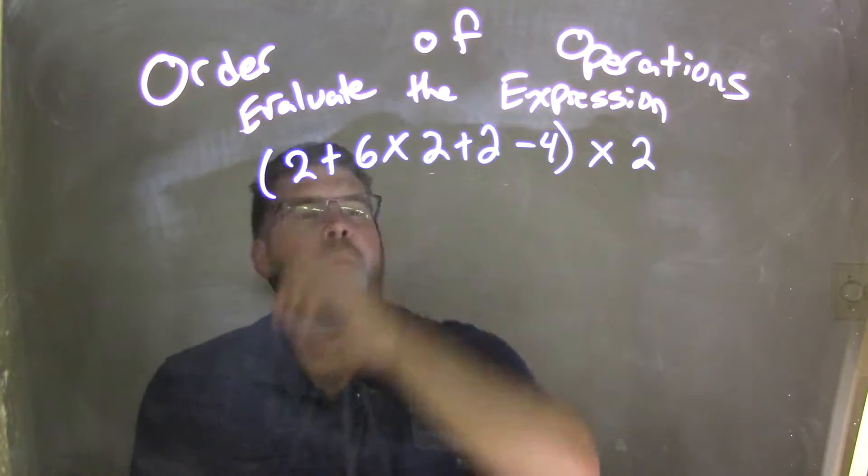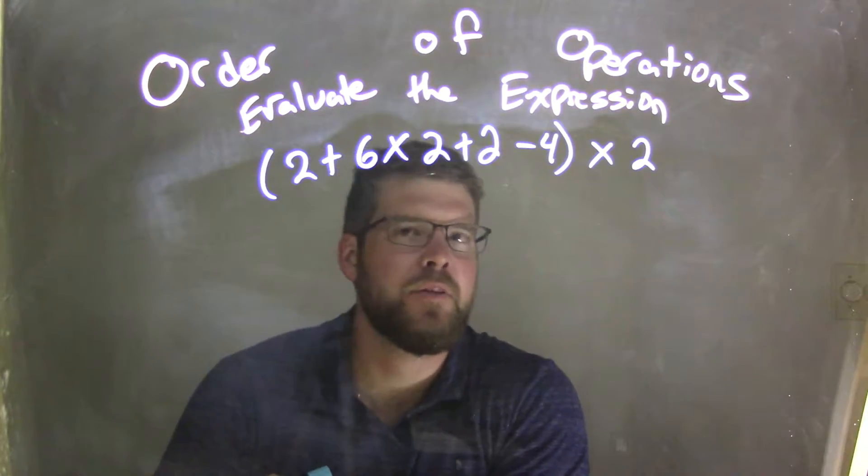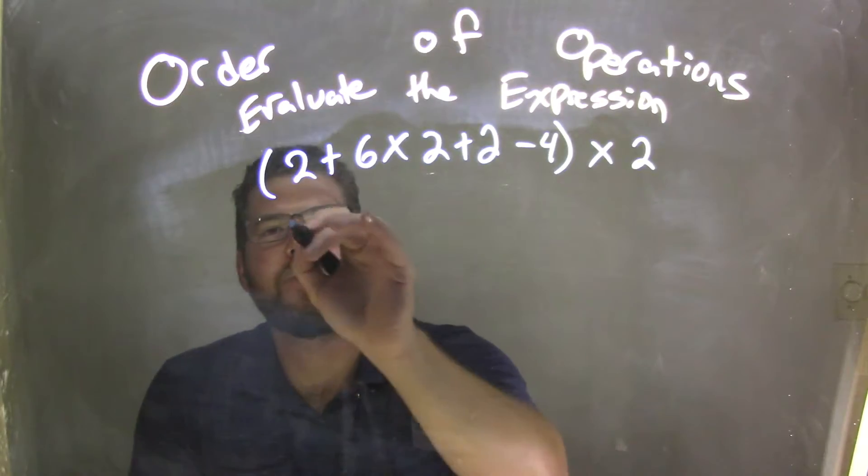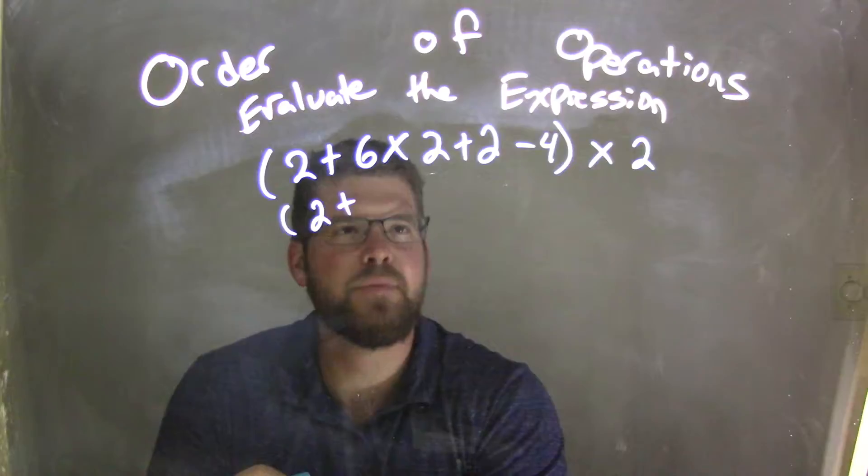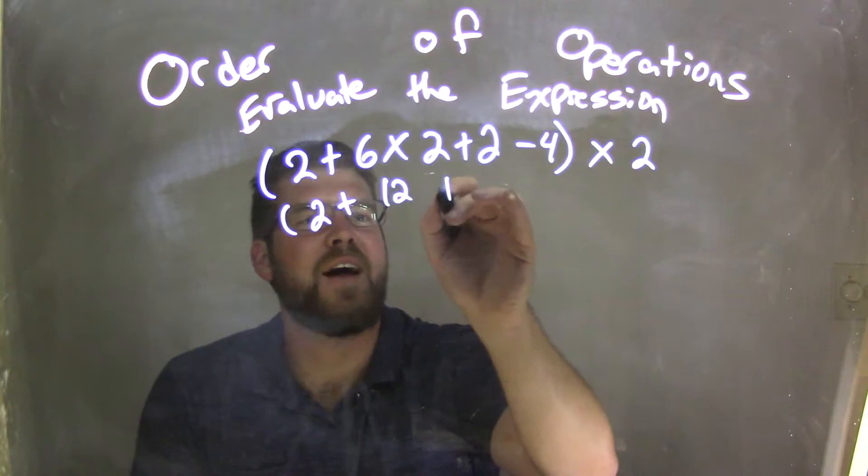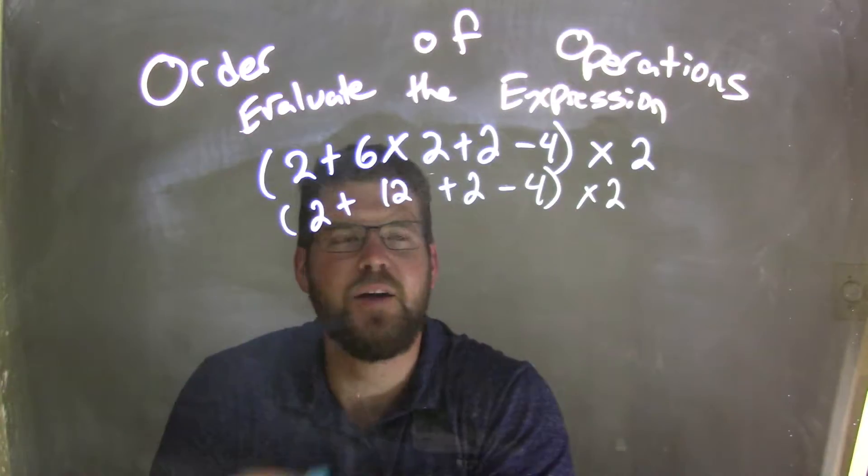We have to deal with what's inside the parenthesis first. So we have 2 + 6 × 2 + 2 - 4. We need to deal with that multiplication first. I'm going to leave the 2 there, and 6 × 2 comes out to be 12. The rest of it is just addition and subtraction, so I'm going to leave that there and write everything else out.